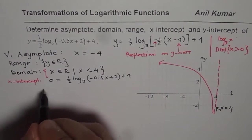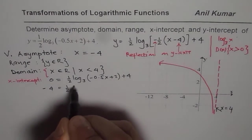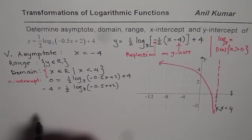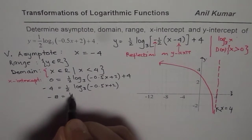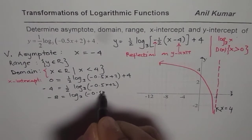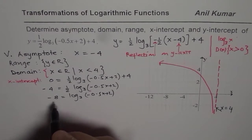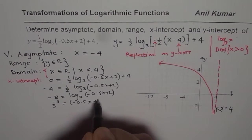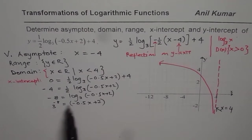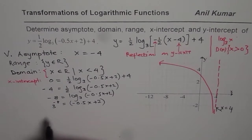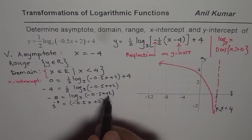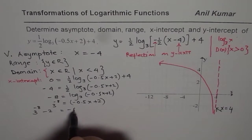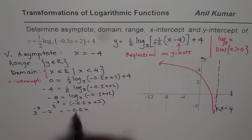To solve this, first we will take 4 on this side. So we get minus 4 equals half of log base 3 of minus 0.5x plus 2. Then we will multiply by 2. So we get minus 8 equals log base 3 of minus 0.5x plus 2. Then we can write it in exponential form. So we get 3 to the power of minus 8 equals minus 0.5x plus 2. We will take 2 on this side, so it becomes minus 2. So we get 3 to the power of minus 8 minus 2 equals minus 0.5x.